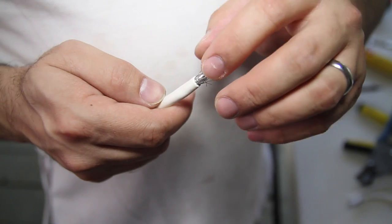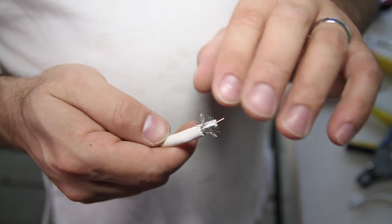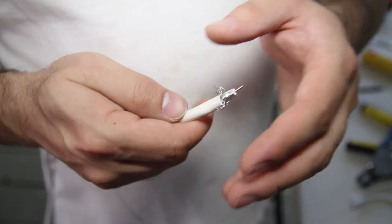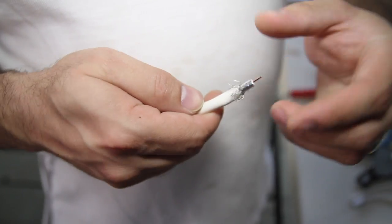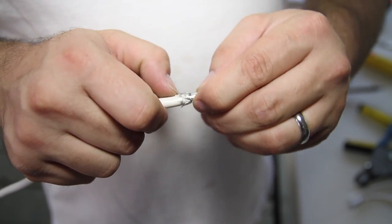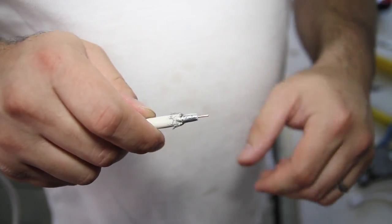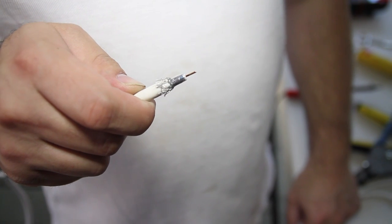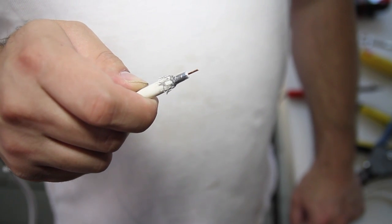We'll now bend the outer conductor braid back in the opposite direction so that it covers the very end of the wire jacket. This cable is now prepped and ready for a new connector.